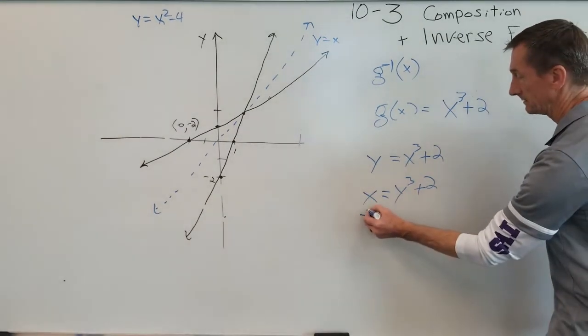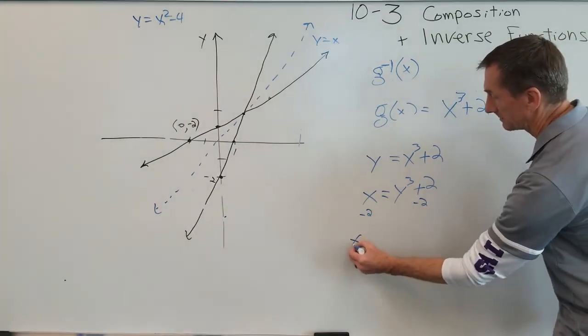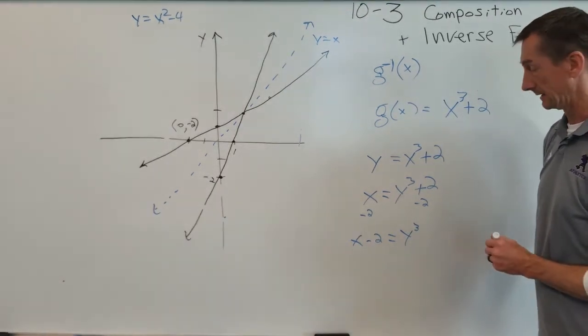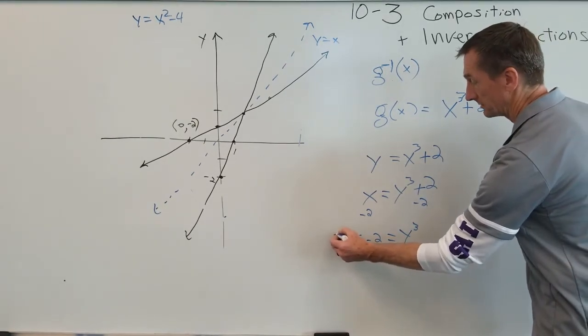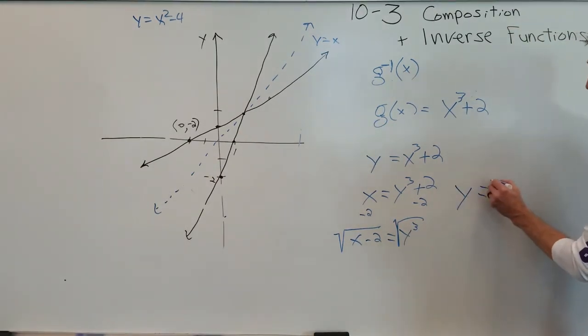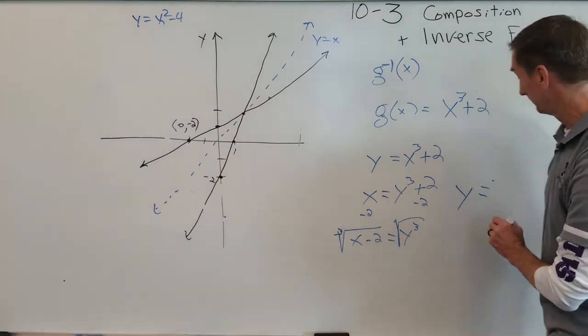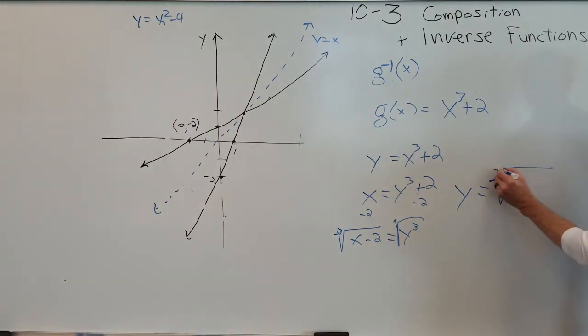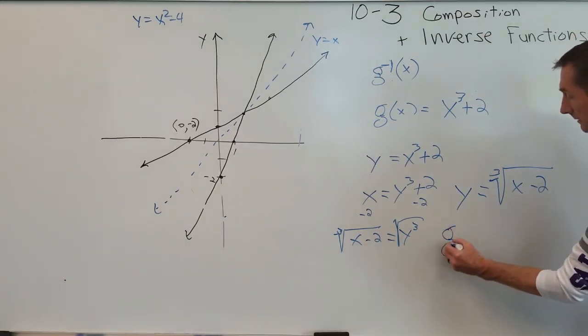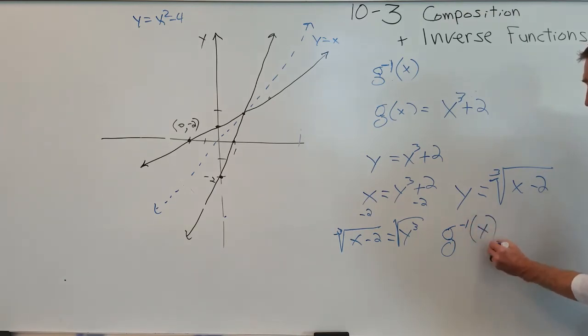Subtract 2 from both sides. That gives me x minus 2 equals y cubed. And now I'm going to take the cubed root of both sides. That gives me y equals cubed root x minus 2. There's our new inverse function. And we can call that g negative 1 of x equals cubed root x minus 2.